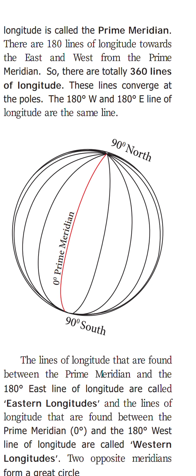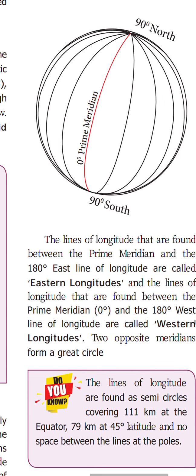The lines of longitude found between the prime meridian and the 180 degree east line are called eastern longitude. From zero degree to 180 degrees towards the east is called eastern longitude.